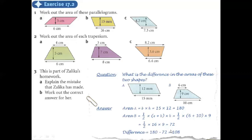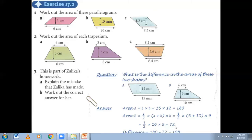But the problem here is that one answer is in millimeters and the other is in centimeters. So first we need to convert one of them. Let's convert the one in millimeters: 180 millimeters squared converts to 1.8 centimeters squared. So 7.2 minus 1.8 gives the corrected difference.